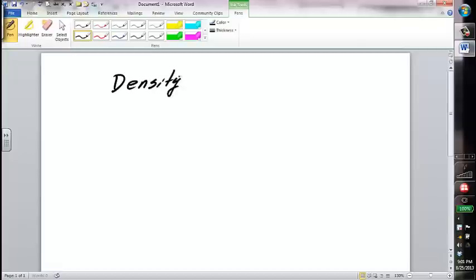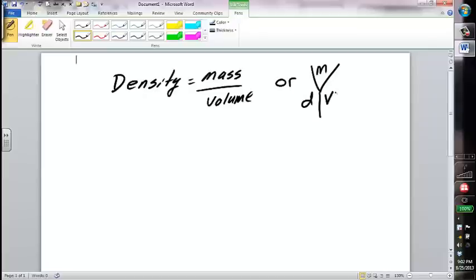Density equals mass divided by volume. Or we have that diagram that we made, which is M up here, and we had D over here, and then we had V over here. Our question is, if we cover up the volume section here, we end up having mass divided by density.